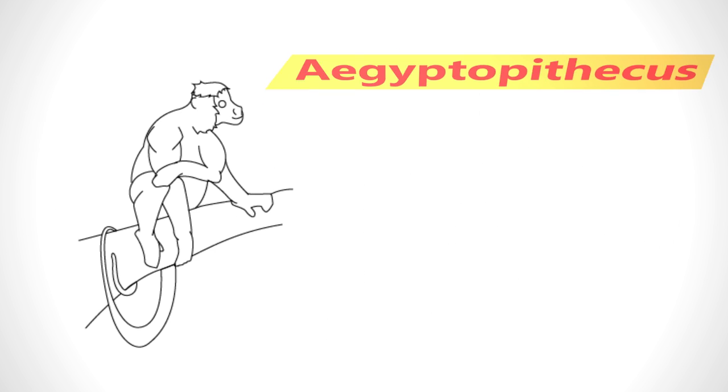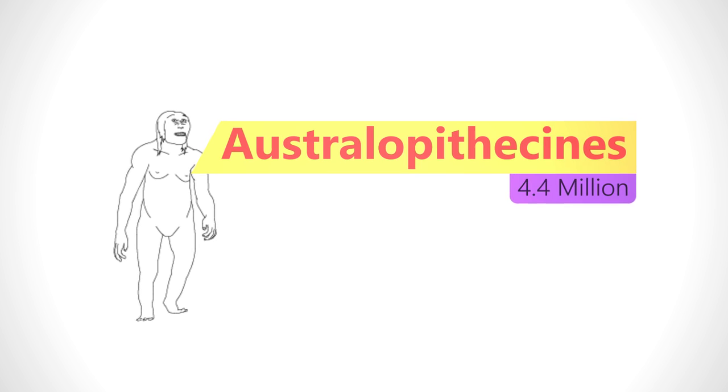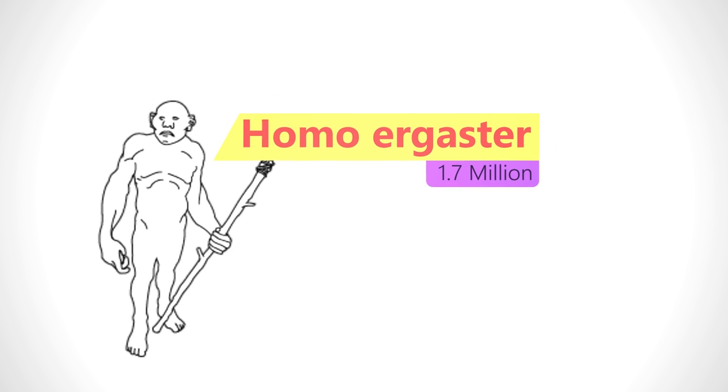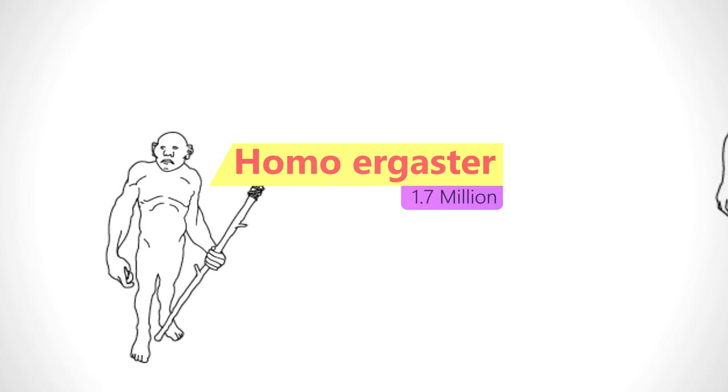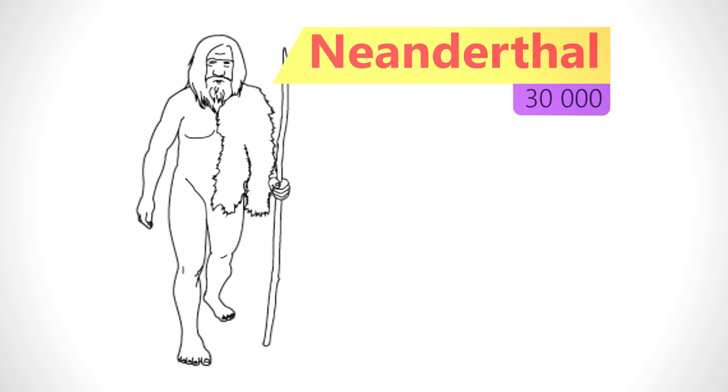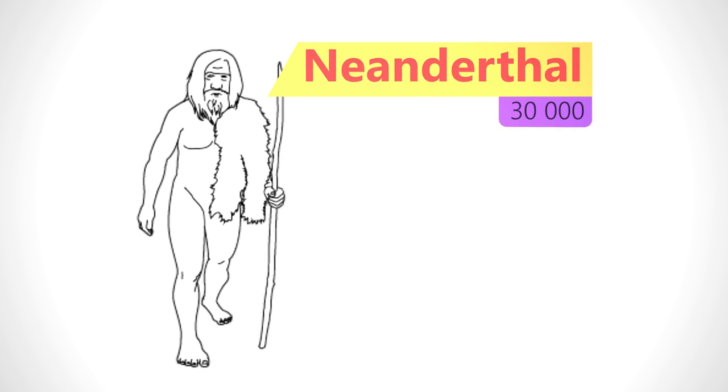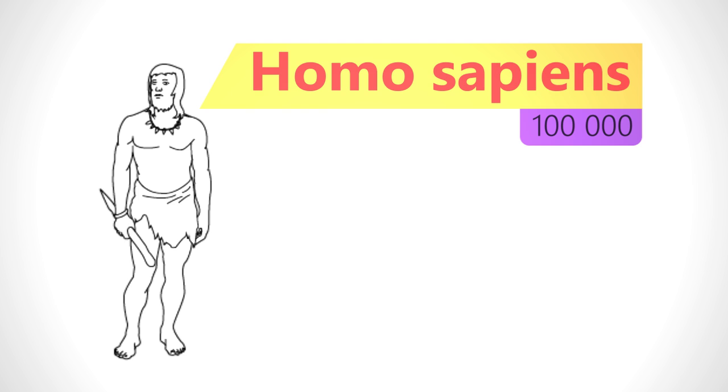So from this video you should note that many different species of Homo evolved from our common ape ancestor between 7 and 13 million years ago, and until only 12,000 years ago there were other Homo species living on planet earth with us.